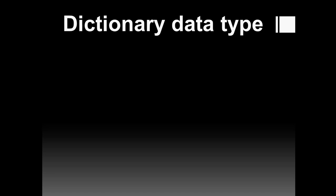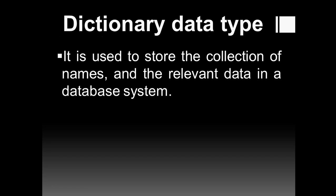The next and last data type is dictionary. Dictionary ka matlab — jahan pe kisi cheez ka matlab ya usse related jo bhi information chahiye, woh dictionary mein se milti hai. For example, if I look up someone's name in a phone dictionary I get their address and phone number. If I use an English-to-Hindi dictionary I get all its meanings, and in an English-to-English dictionary I get verb forms, antonyms, and synonyms. Similarly, the dictionary data type is used to store a collection of data and its relevant information in a database system.